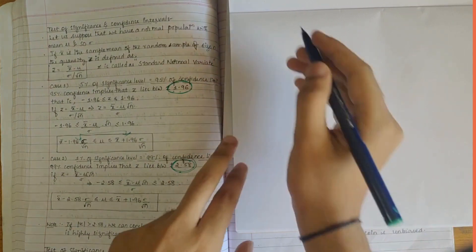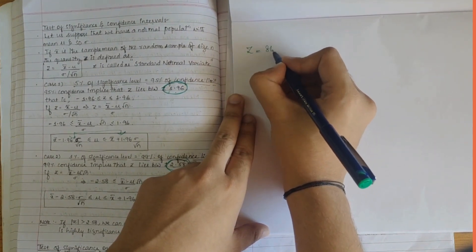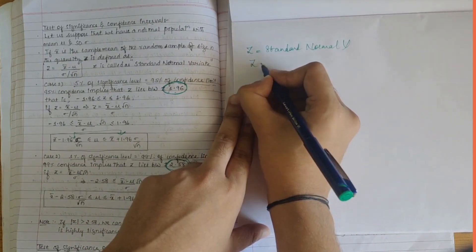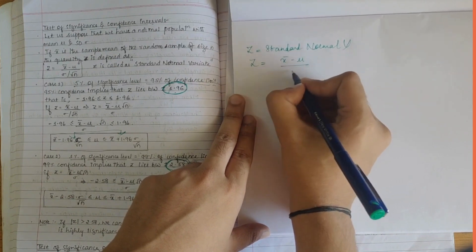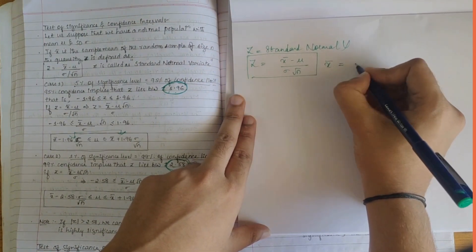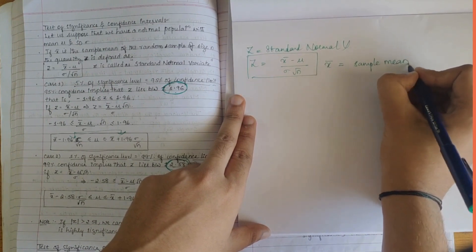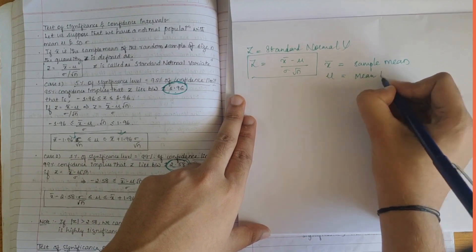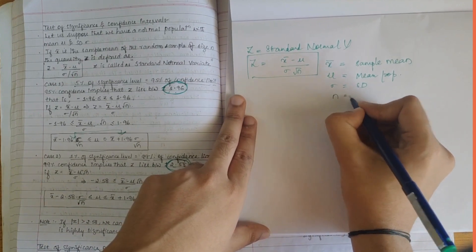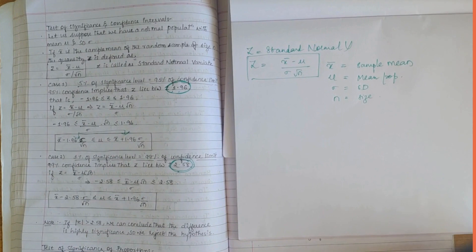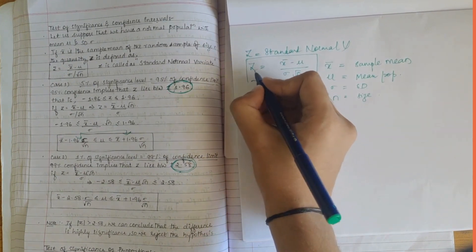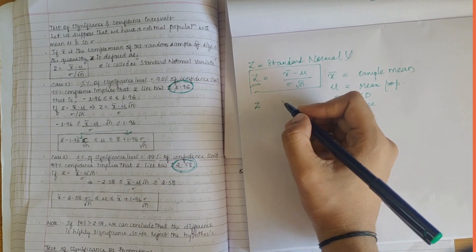Now let's look into test of significance and confidence intervals. We know that z is the standard normal variate, which can be written as x-bar minus mu, divided by sigma, multiplied by root n. Here x-bar is the sample mean, mu is the mean of the population, sigma is the standard deviation, and n is the sample size.